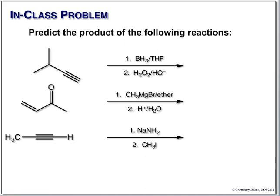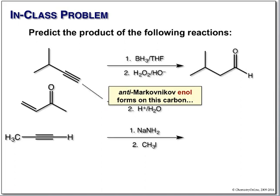The enol undergoes rearrangement — tautomerization — to give a ketone or an aldehyde. We need to look at the triple bond and decide which is the Markovnikov carbon — which would be the most stable carbocation. The carbon attached to another carbon is the Markovnikov carbon; the terminal carbon is the anti. Therefore we put a hydroxyl group on the terminal carbon, making an enol that rearranges to an aldehyde. Our carbon chain stays the same — one, two, three, four with a methyl group — going from alkyne to aldehyde.